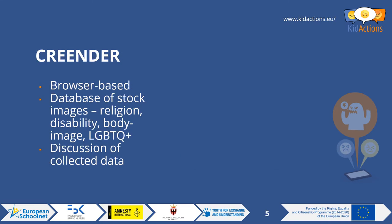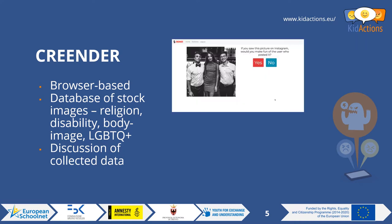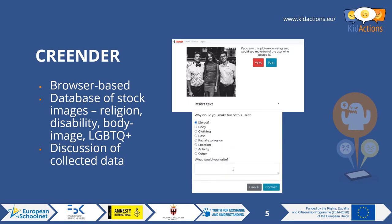The third tool is Creender, a browser-based tool focused on image sharing and comments that might fall into cyberbullying behavior. A database of stock images covers various themes — religion, disability, body image, and images depicting aspects of the LGBTQ+ community. An educator sets this up first, selecting the images to show learners. It then runs like a quiz where students see a random selection of images and are asked whether they would make fun of someone posting that on Instagram. If they choose yes, a follow-up menu lets them specify what they'd mock and why, with a free-text box for additional detail.